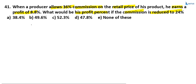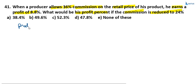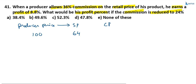Suppose the producer price is equal to 100. What is the selling price? With 36% commission, the selling price is equal to 64% of the marked price. Now, we require the cost price, and this is equal to minus 36%. The profit is equal to 8.8%.